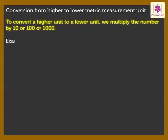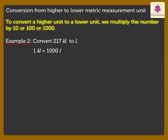Now, let us solve one more example. Convert 217 kilolitres to litres. We know that 1 kilolitre is equal to 1000 litres. So, the factor is 1000. Therefore, on multiplying 217 with the factor 1000, we get the answer as 2,17,000 litres. That is, we insert three zeros to the right of the higher unit.